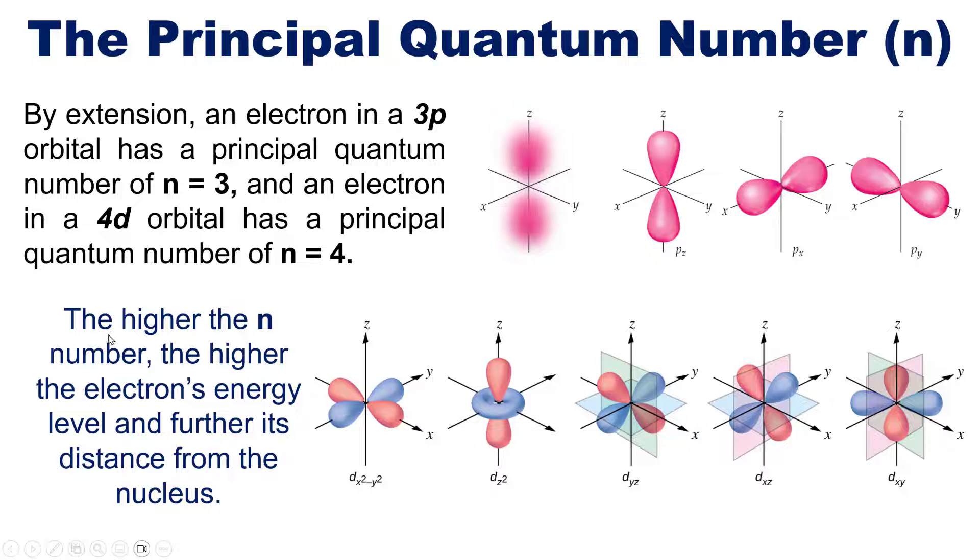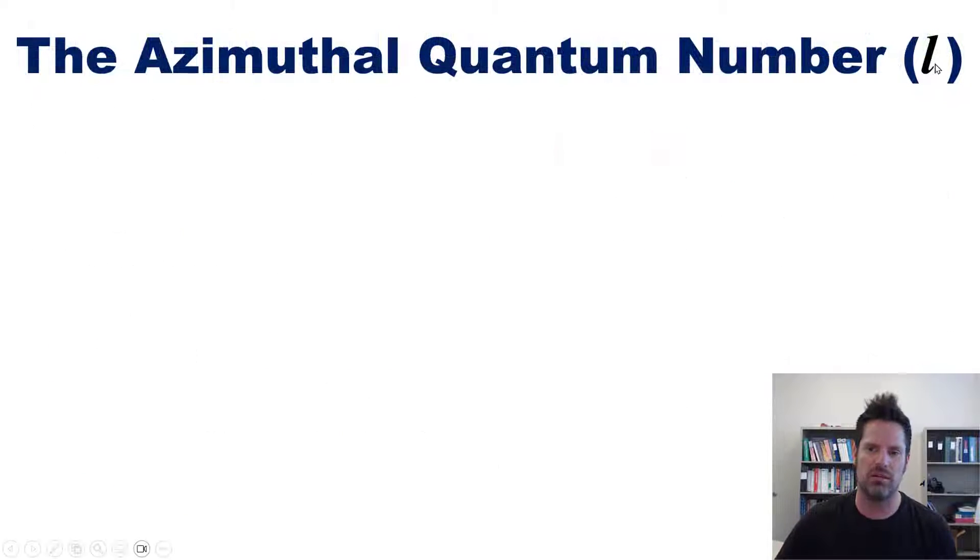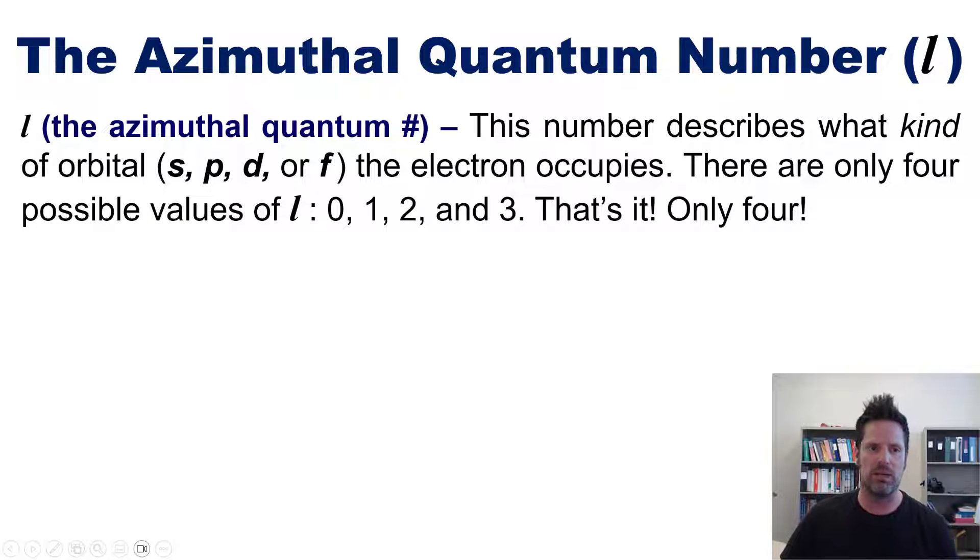That takes us to our next quantum number, called the azimuthal quantum number, represented by this italicized letter l. The azimuthal quantum number l describes what kind of orbital—S, P, D, or F—the electron occupies.